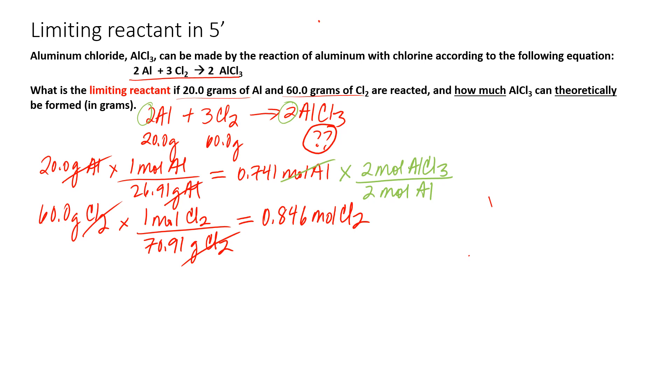Notice again, things cancel nicely here and we end up with the molar quantity of our product, which is the same number as we started with, 0.741 mole. But this time we know it's our product AlCl3.